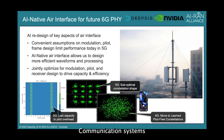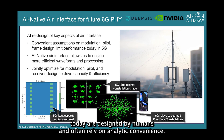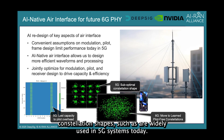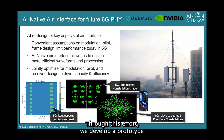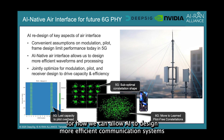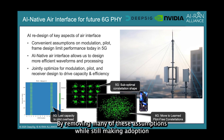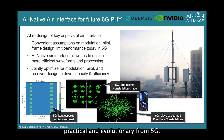Communication systems today are designed by humans and often rely on analytic convenience. This includes the use of explicit dedicated pilot signals and rectangular constellation shapes, such as are widely used in 5G systems today. Through this effort, we develop a prototype for how we can allow AI to design more efficient communication systems that could be used in 6G, by removing many of these assumptions while still making adoption practical and evolutionary from 5G.